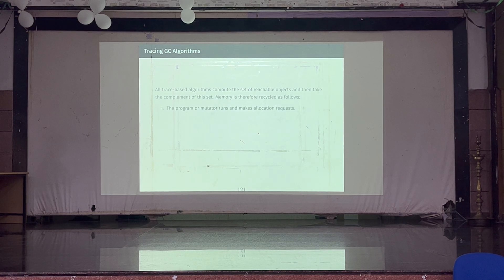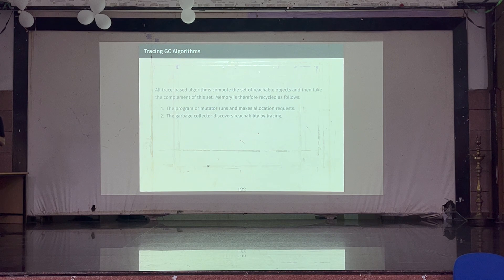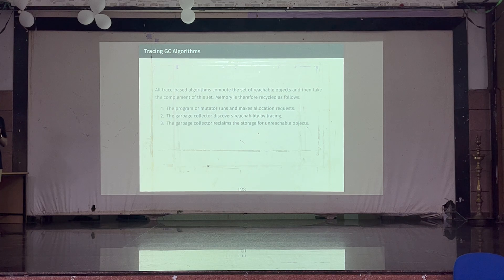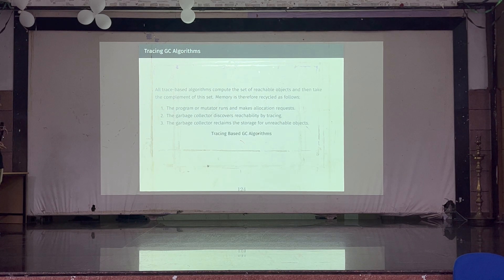All tracing GC algorithms compute a reachable set; whatever is not reachable is considered unreachable and freed. Memory is recycled in three simple steps: a program asks for memory, the allocator gives it, a garbage collector performs reachability analysis and frees unreachable objects, and then reuses that storage. There are two tracing-based algorithms: the copying collector and the mark-and-sweep collector.